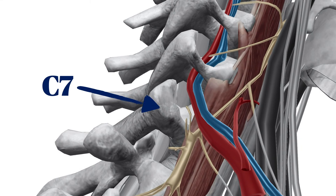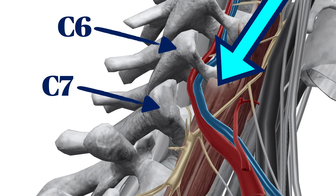So we'll just put a needle at that point, right? Well, not so fast — those pesky vertebral vessels are very close to the ganglion, and so is the dome of the lung, so there's potential for serious needle trauma at that level. Most clinicians choose to put local anesthetic at the base of the C6 transverse process instead, and count on some caudal spread to the stellate.